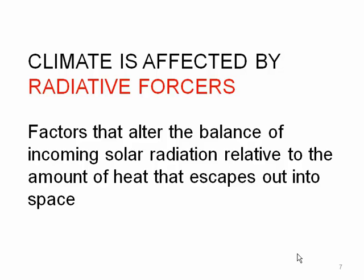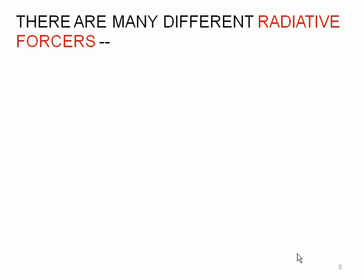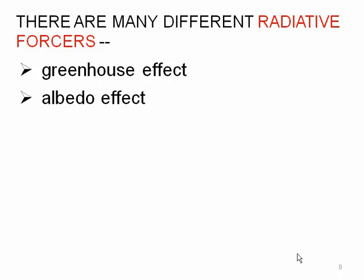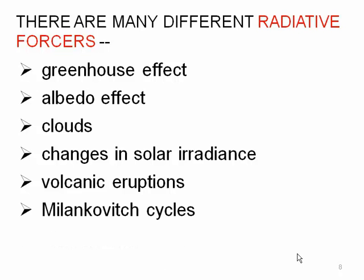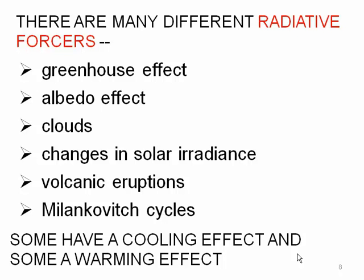Recall that the earth is energetically open to space, whereas it's closed to matter and materials. There are many different radiative forcers, and they can have either a heating or a cooling effect. Some of the major ones are the greenhouse effect, the albedo effect, clouds, changes in solar irradiance — which is the output from the sun — volcanic eruptions, and Milankovitch cycles, which have to do with the rotation and orbit of the earth. It's important to note that many of these factors can have either a cooling or a warming effect on the planet.